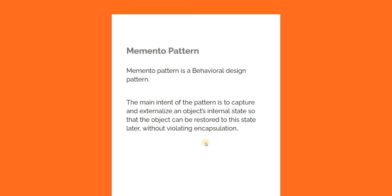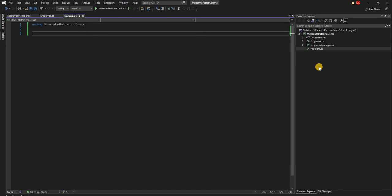In today's video, to explain how the Memento design pattern works, we'll use an HR system that manages employee information, showing how to manage state externally without violating encapsulation. There are three main constituents: first is the main object whose state needs to be changed — in our case, the Employee; second is the Memento object, which keeps the state; and finally the Employee Manager, which manages the state externally. The Memento object is created inside the Employee itself to preserve encapsulation.